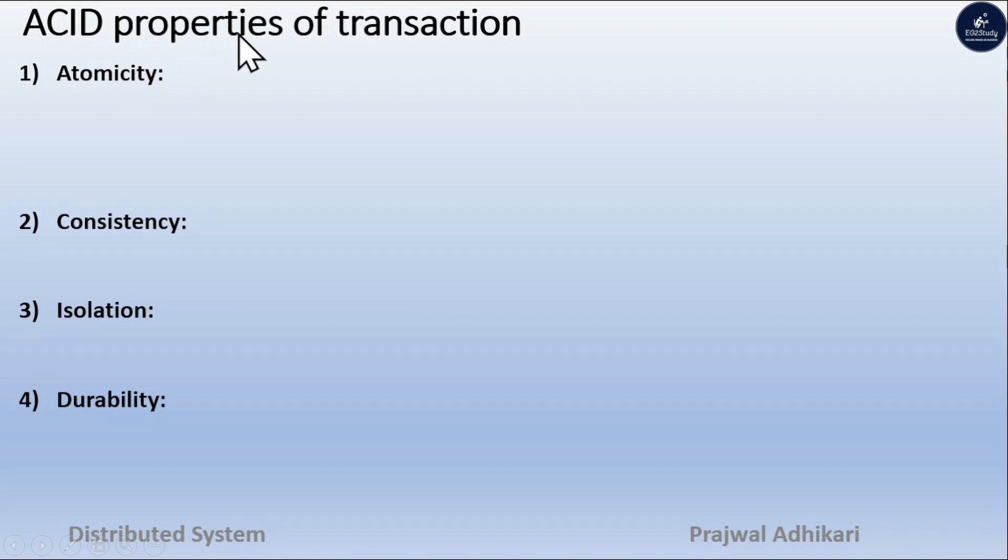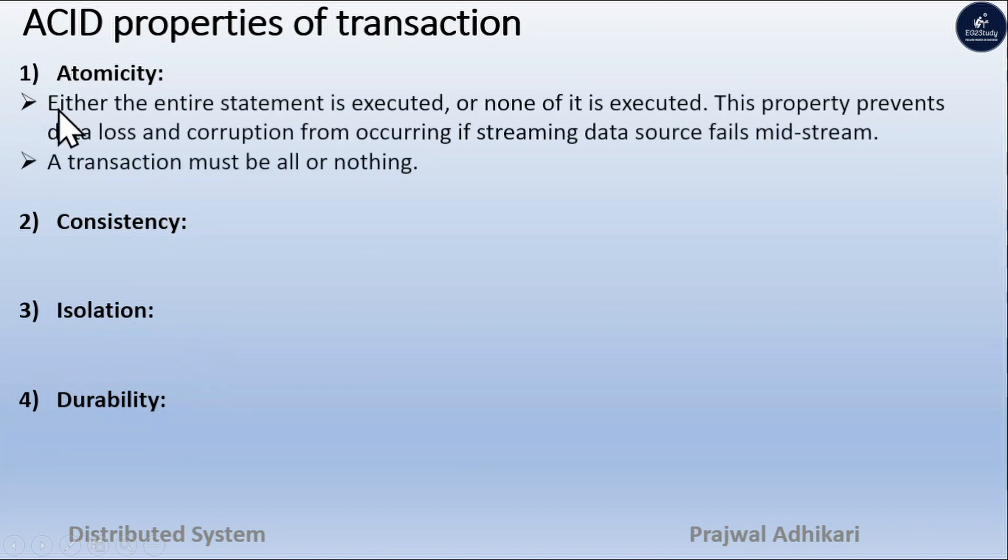Now, ACID properties of transaction. Here, A means Atomicity, C means Consistency, I means Isolation, D means Durability. At first, Atomicity.